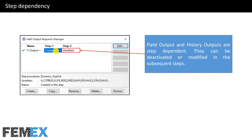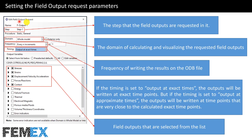In step 1, a field output is created, and in step 2 it is modified. This is the edit field output request. In step 1, field output 1 is requested. The domain is set to whole model, so field output 1 will be calculated and visualized across the entire model. The frequency of writing field output is set to every N increments, with N set to 1. Timing is set to output at exact times, meaning the output will be written at exact time points.